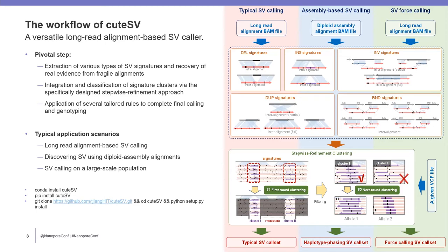Finally, Qtai3 uses several tailored rules to implement rescaling and genotyping based on the refined cluster of signatures. On the basis of these specific design modules, there are three different applications of Qtai3: discovering structural variation using long read alignments, discovering structural variation using diploid assembly alignments, and cohort-based structural variation calling.